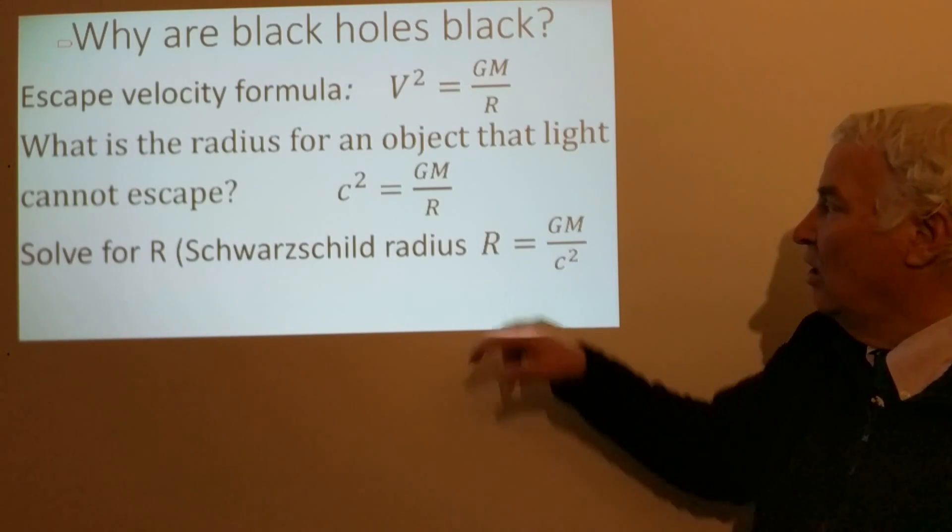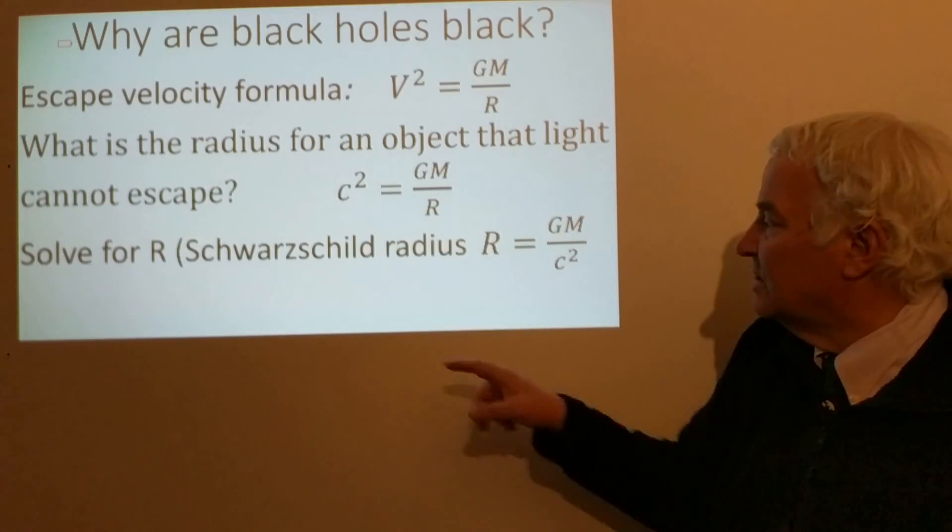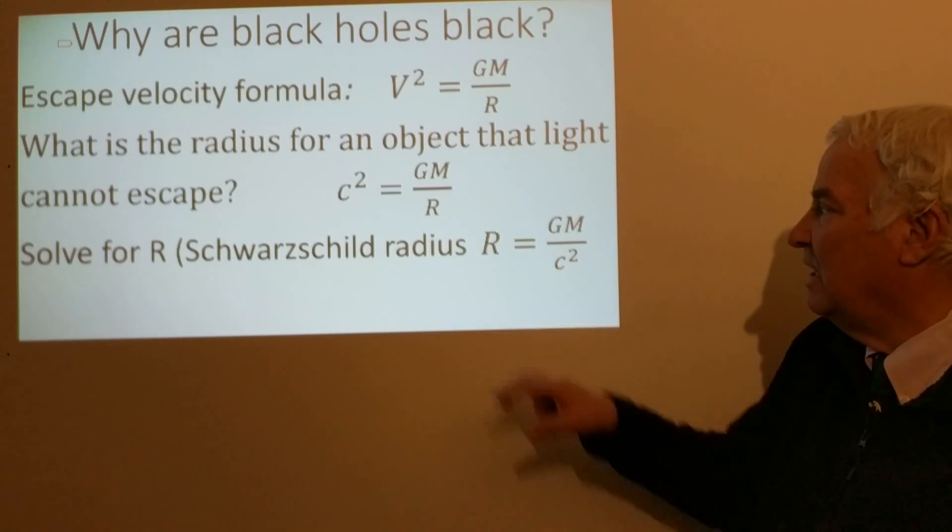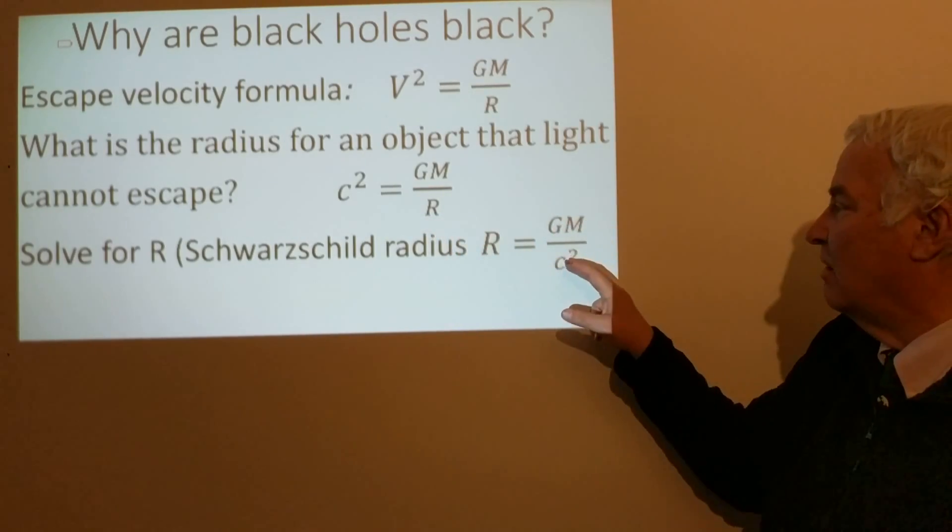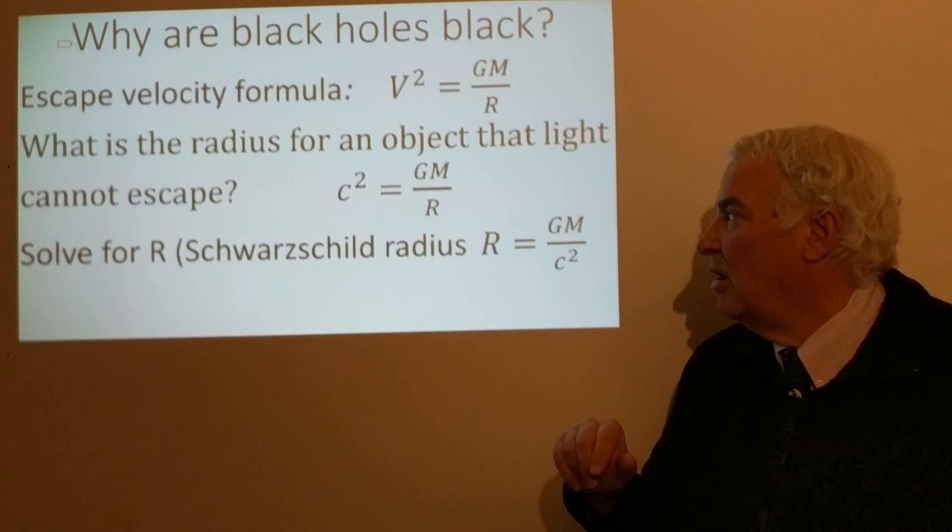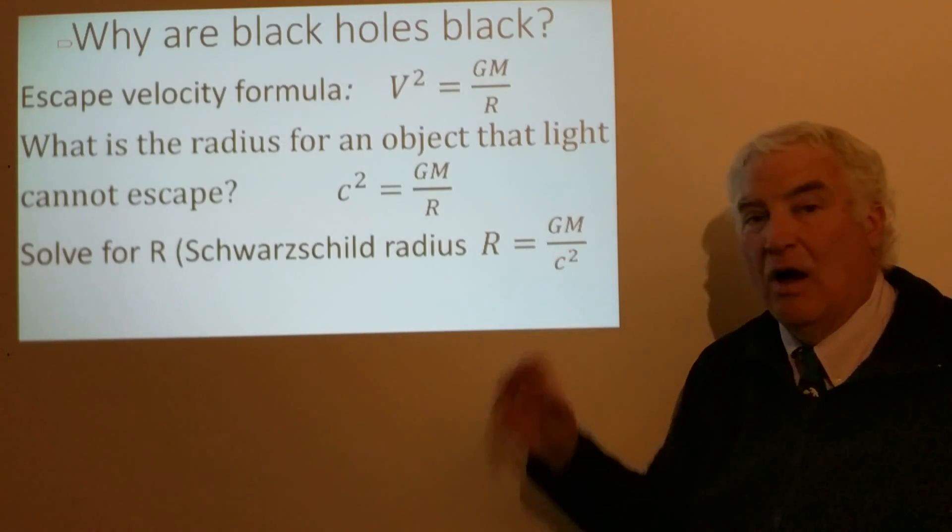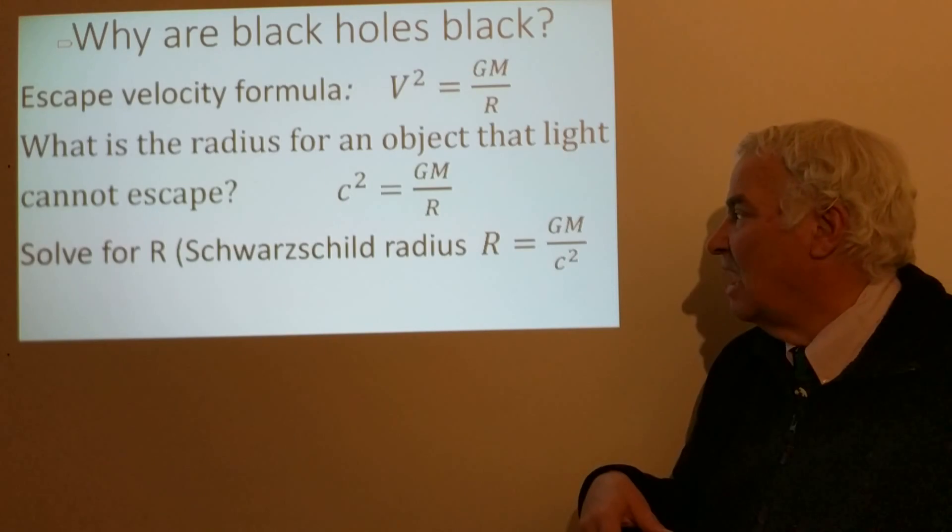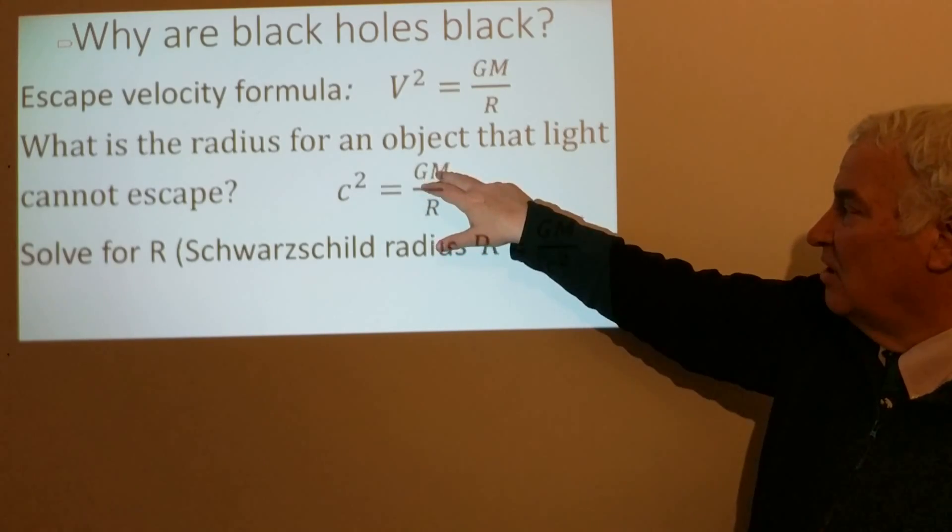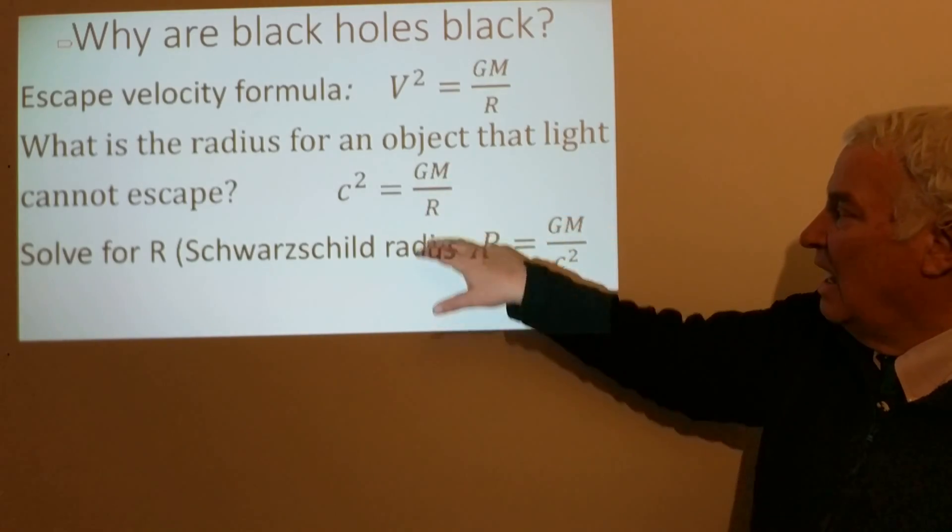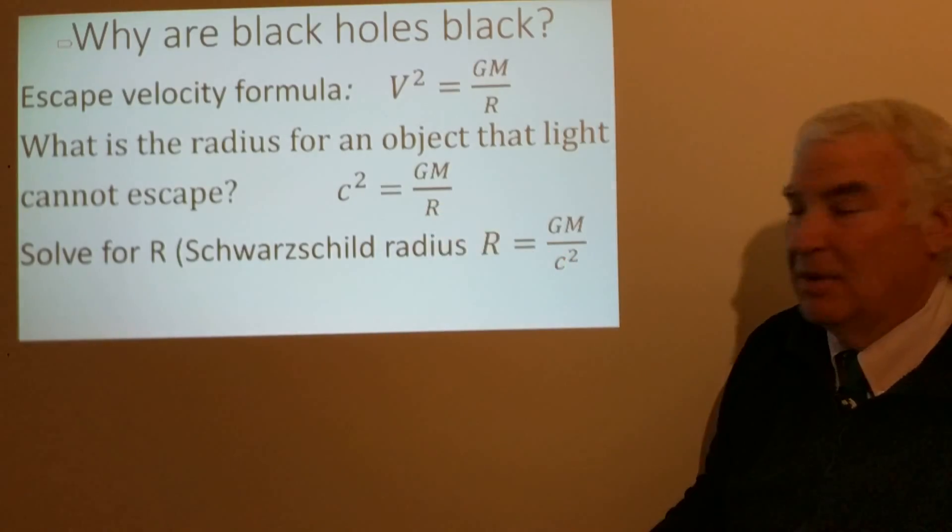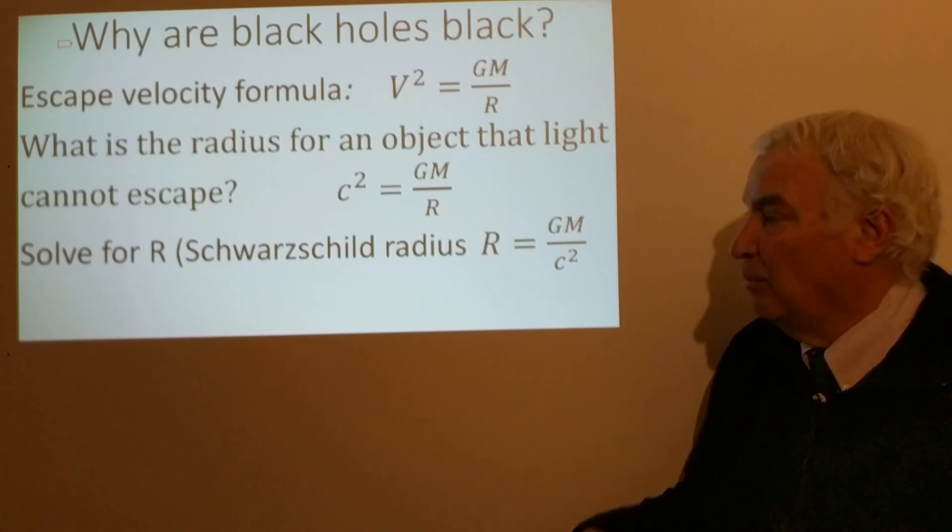To do this, we could solve for R. This is called the Schwarzschild radius, and this would equal GM/c². So this radius will depend on the mass of the star, but we can figure out what size that would be for a star. We would want an object that has a very high mass, maybe like the sun or several times the mass of the sun, and a very small radius, something less than a few hundred kilometers, say, to form a black hole.